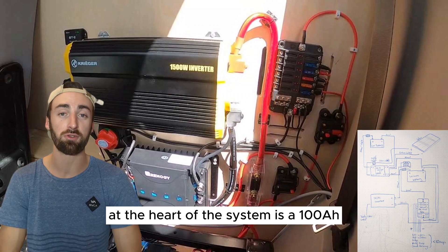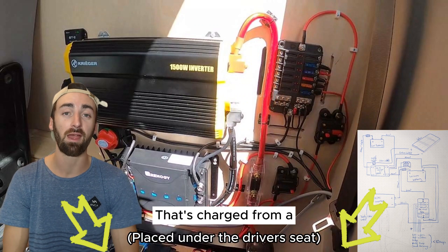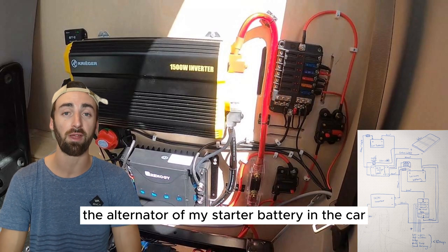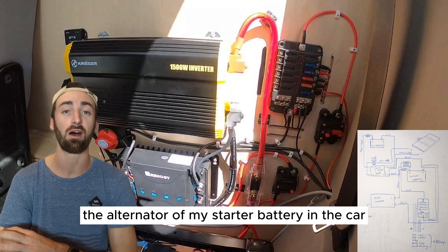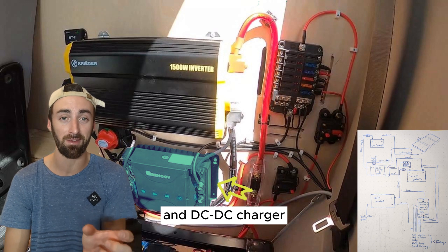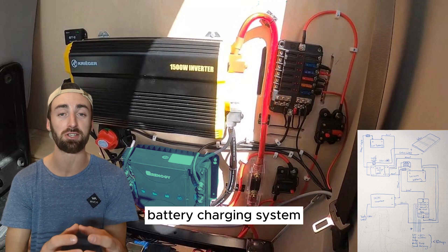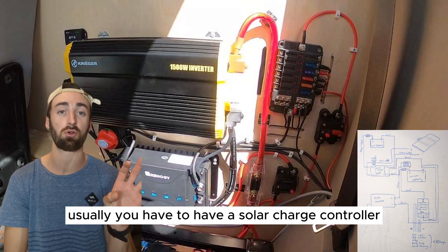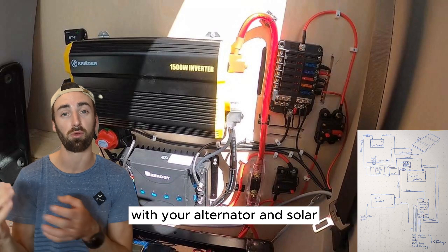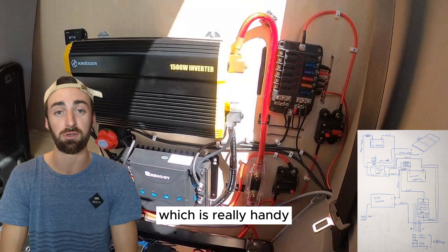The heart of the system is a 100 amp hour lithium ion battery from Renogy. That's charged from a 175 watt Renogy solar panel as well as from the alternator of my starter battery in the car. Both of those are controlled through the MPPT and DC to DC charger also from Renogy. That's a two-in-one battery charging system. Usually you have to have a solar charge controller and a DC-DC charger to charge your battery with your alternator and solar. This unit from Renogy does both in one which is really handy.